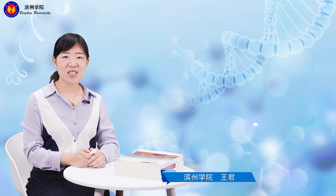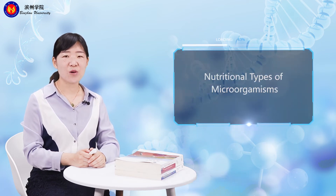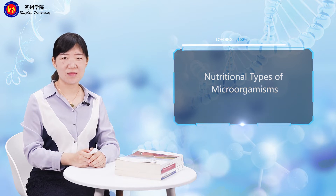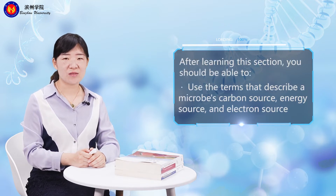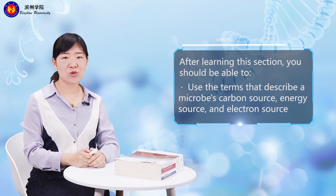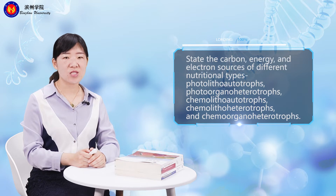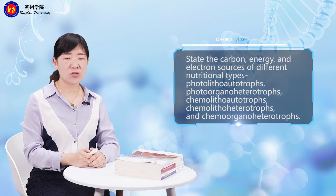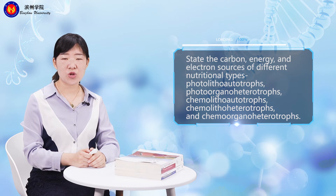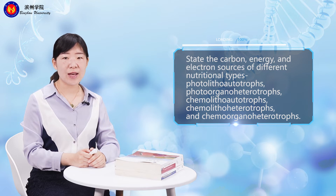Hello everyone. This section is about nutritional types of microorganisms. After learning this section, you should be able to use the terms that describe a microbial carbon source, energy source, and electron source, and you should be able to state the carbon, energy, and electron sources of different nutritional types such as photolithol autotrophs, photoorganoheterotrophs, chemolithol autotrophs, chemolithol heterotrophs, and chemo-organoheterotrophs.